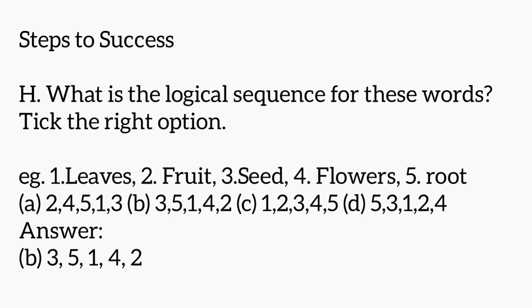And see the next one, step to success. What is the logical sequence for these words? Tick the right option. See the first one, example. Leaves, fruit, seed, flowers, root. We have to sequence it as a logical. First one, seed. After seed, it comes root. After root, it comes leaves. After the leaves, we can get the flowers. After that flowers, we can get fruit. So the answer is B.